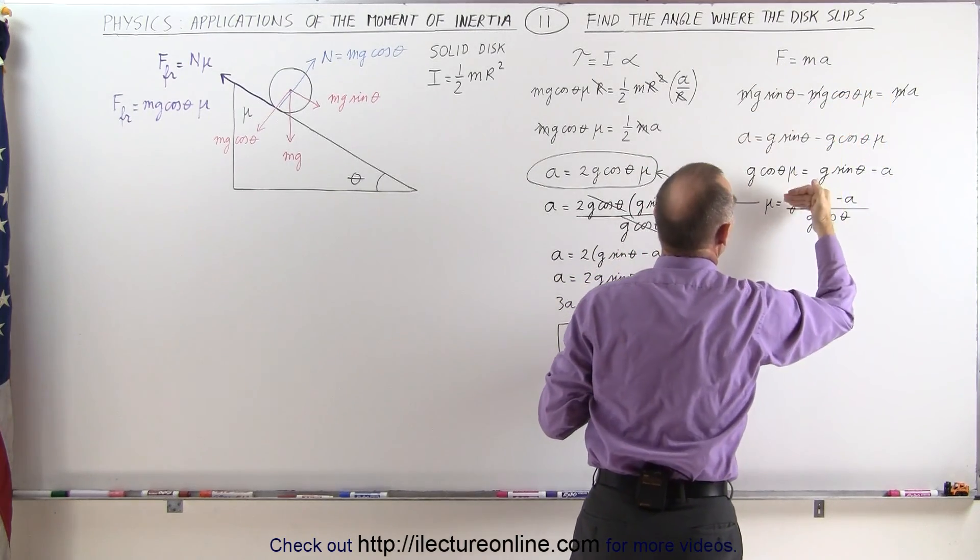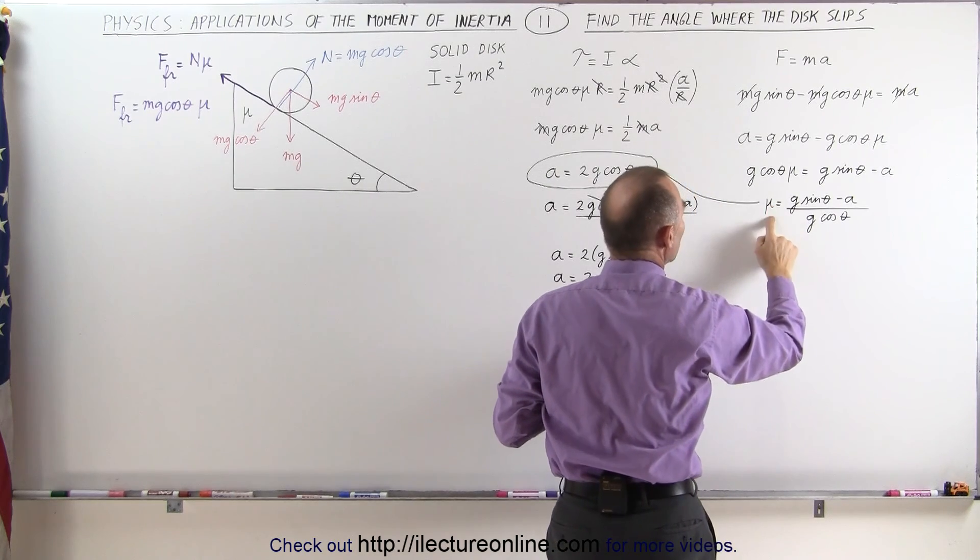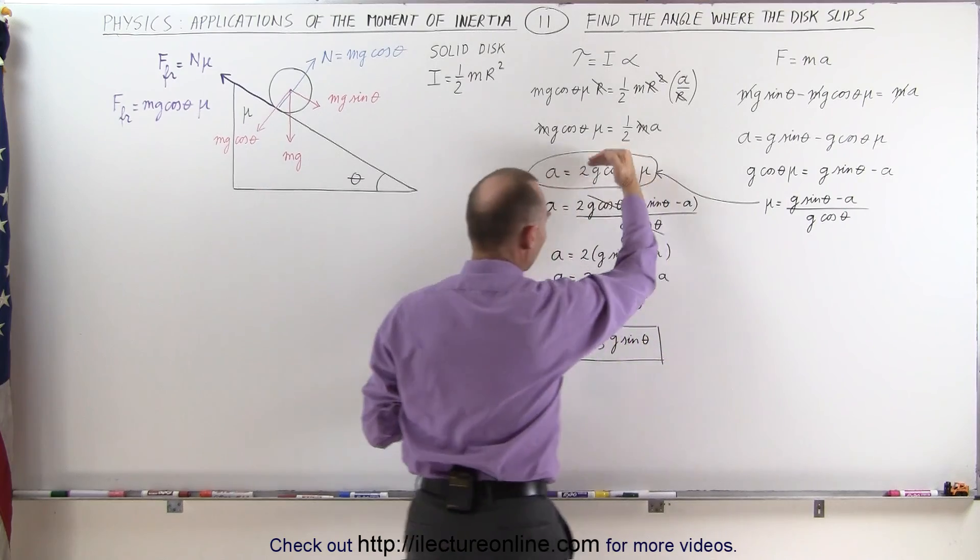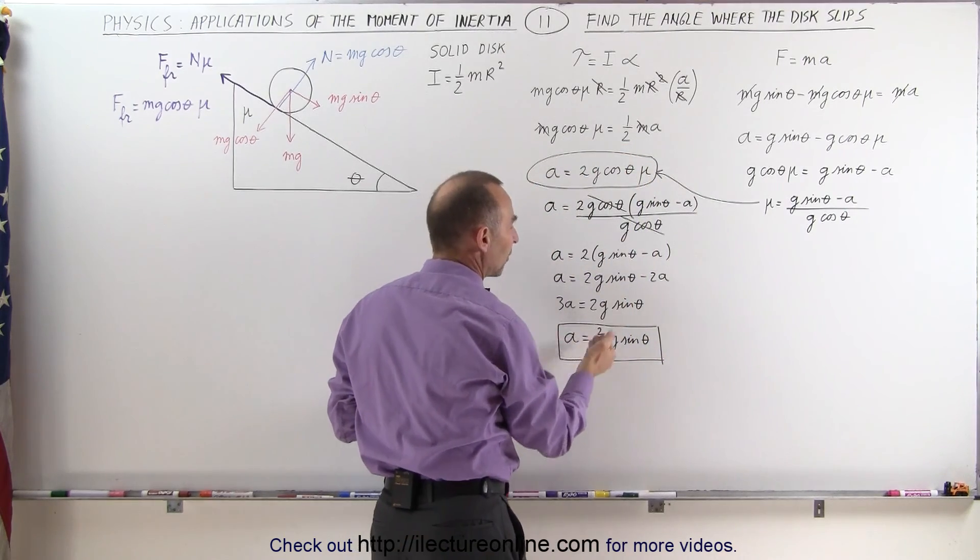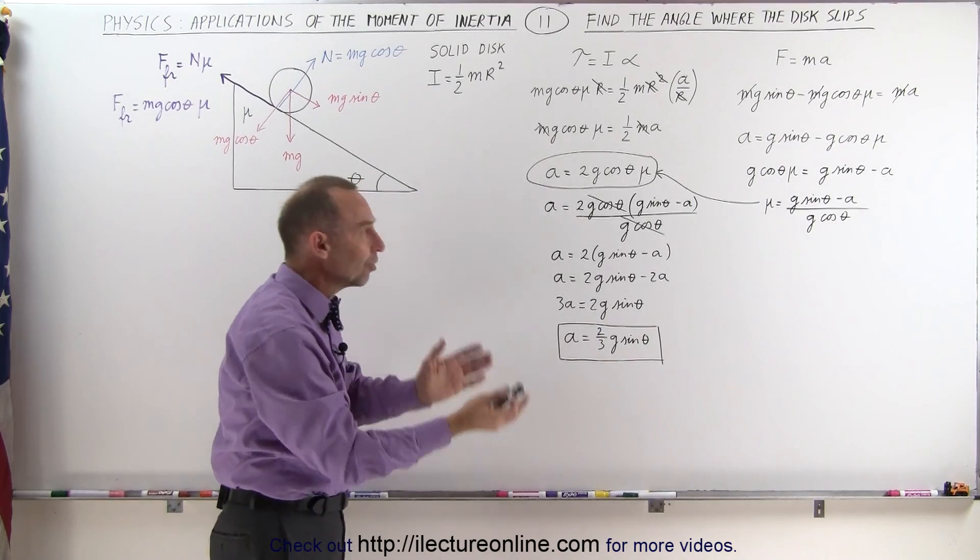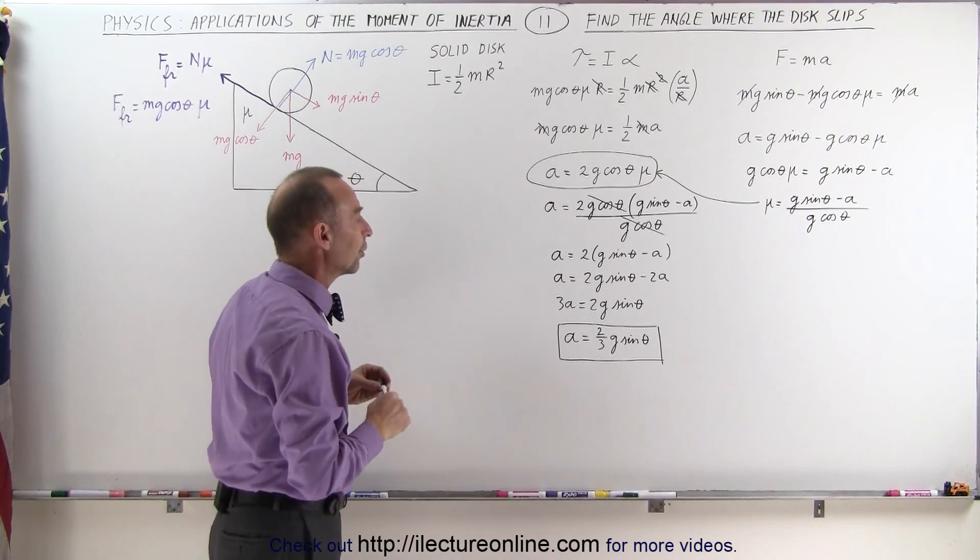Again we simplify this and we solve this for mu. Once we take mu and we plug that into this equation, we can then solve the acceleration which ends up being two-thirds g sine theta. And if you'd like to see how that was done, let's go back to the previous video earlier on in the series.